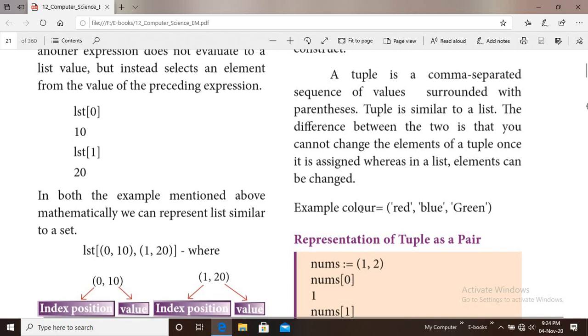A tuple is a comma-separated sequence of values surrounded with parentheses. The first difference: in a list square brackets enclose it, in a tuple parenthesis enclose it. This is the first difference. Tuple is similar to a list.